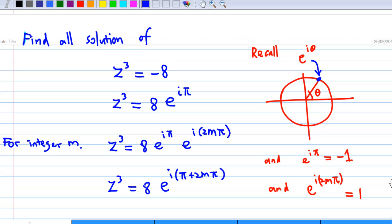This is an illustration to show you how to find roots of a complex number. In this case we are going to find all the solutions of z cubed equals minus 8.